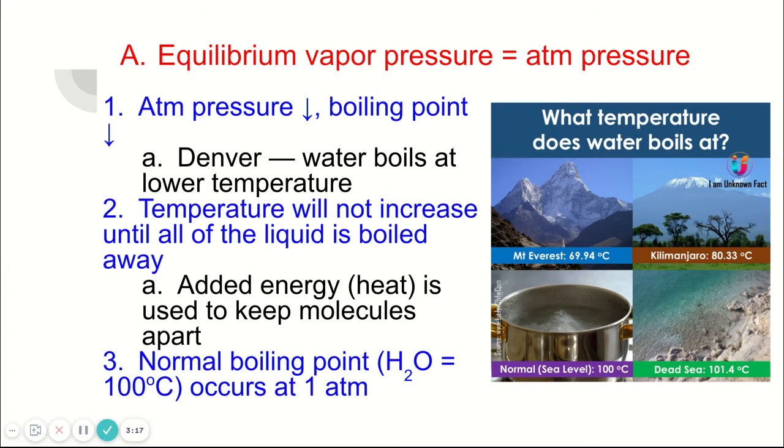Mount Kilimanjaro is 80 degrees Celsius, which means the pressure is a little higher up there but not much. The Dead Sea is below sea level so the pressure there, or the temperature there, is higher, actually than 100 degrees Celsius.